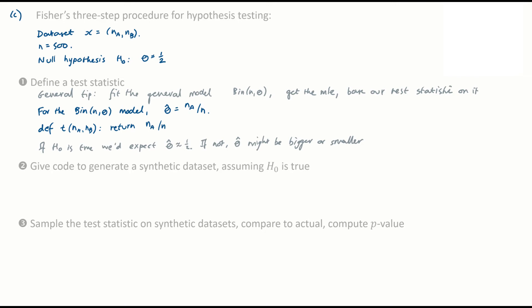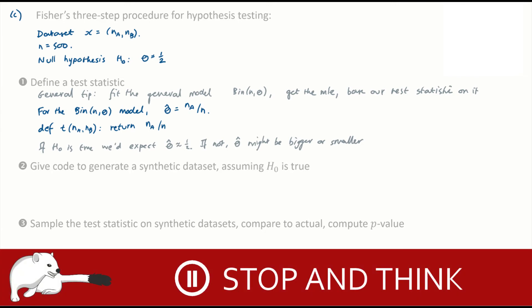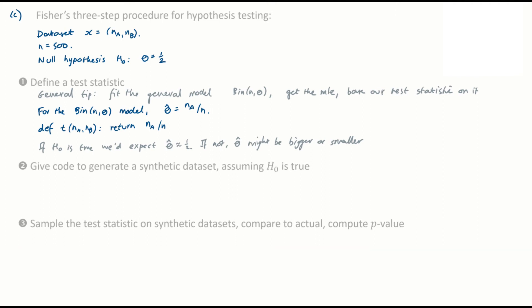Give code to generate a synthetic data set assuming H naught is true. That's easy. It's just the same as before. With one difference. For Fisher's hypothesis testing procedure, we generate a synthetic data set assuming H naught is true. So that's why I've said let that be a binomial random variable with parameters N and a half. The H naught assumption is that theta is a half.